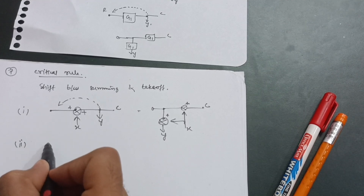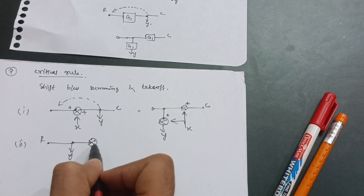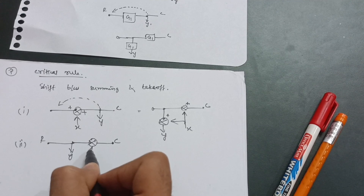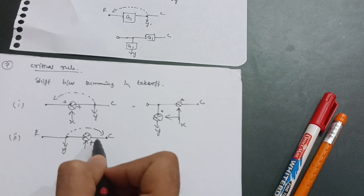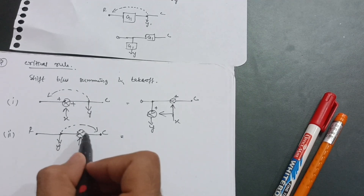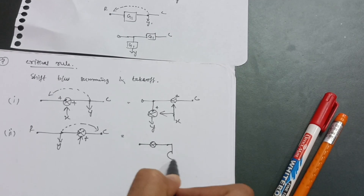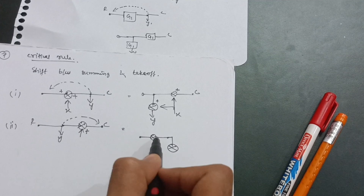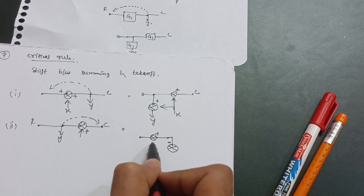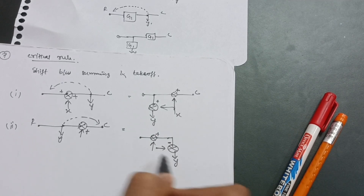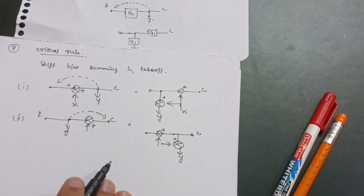Second case: input, takeoff point, then summing point (positive), then reference output. When shifting the takeoff point in front of the summing point, you add another summing point but with the opposite sign. Since it was positive, you add a summing point with negative feedback. The takeoff point Y is shifted in front, and the output C remains the same.